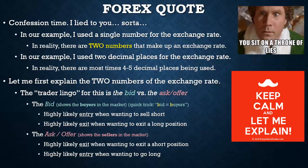In trader lingo, there are two key terms: the bid and the ask, also called the offer. A quick trick: think of the Bs — bid, buyers. By process of elimination, if the bid is where the buyers are hanging out, then the ask and offer has to be where the sellers are. So just remember: bid equals buyers, ask/offer equals sellers.